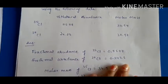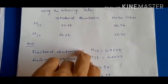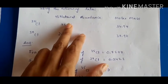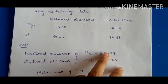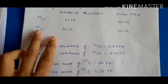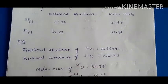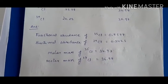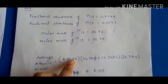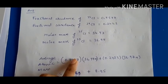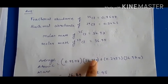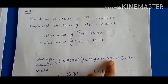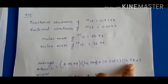Now fractional abundance is calculated by dividing the percentage by 100. So fractional abundance of chlorine-35 is 0.7577 and chlorine-37 is 0.2423. Molar masses are 34.97 and 36.97. The formula for average atomic mass is: fractional abundance of isotope 1 × molar mass of isotope 1 plus fractional abundance of isotope 2 × molar mass of isotope 2.